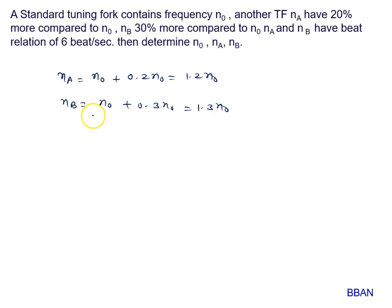NA and NB have a beat relation of 6 beats per second. So, we can say that NA minus NB or NB minus NA that is basically 0.1 N0. This beat frequency is 6.